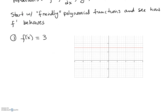Let's look at a constant function, f of x equals 3. If we were to look at the graph, we know that the slope — or derivative, remember derivative is just the slope of the tangent line at all points — the slope for this graph is always 0. So it would make sense that f prime of x would be 0, because all the way through this line, you look at the derivatives throughout and the slopes are 0.